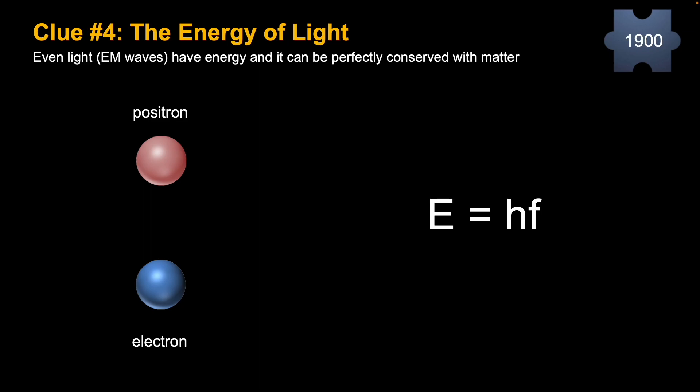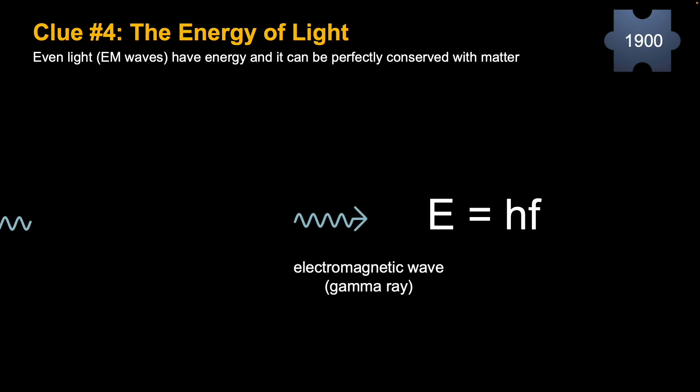Light in this case refers to EM waves. Light just happens to be a certain frequency of electromagnetic waves. We'll show an example of the conservation of energy of matter: an electron, which is a particle, and its antiparticle, the positron, in what's called annihilation, where they disappear and create two gamma rays, which is an electromagnetic wave, just a higher frequency than light.